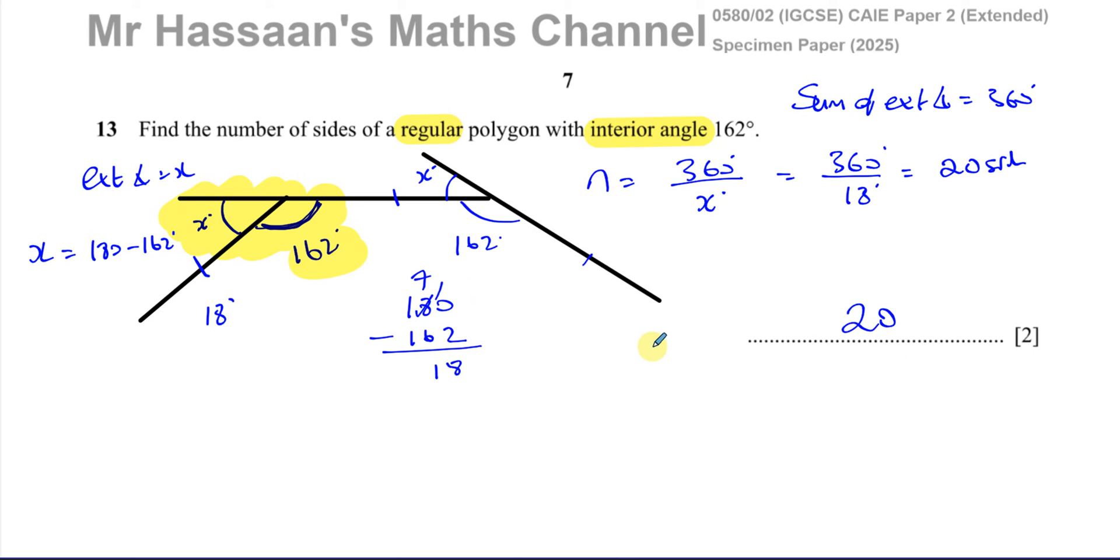There's the answer to question 13. There's an alternative way of doing this, which personally I don't prefer, which is that the sum of the interior angles is 180 times n minus 2. If you divide that by the number of sides, you're going to get 162.